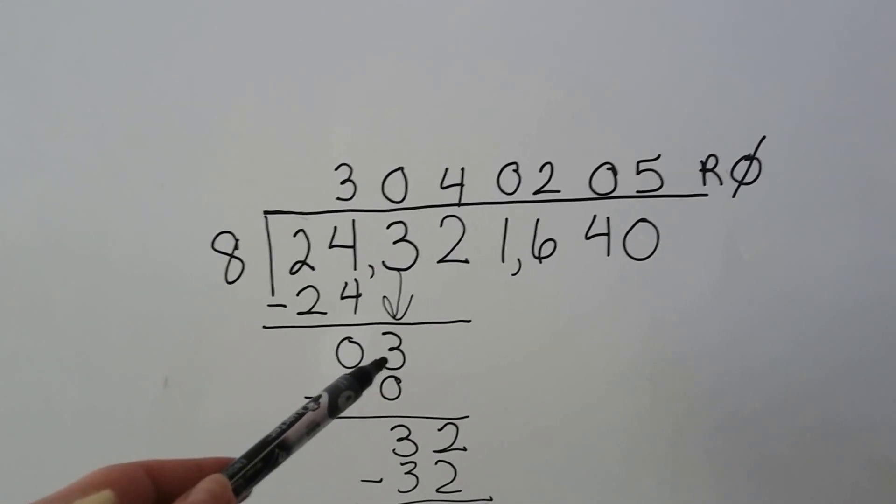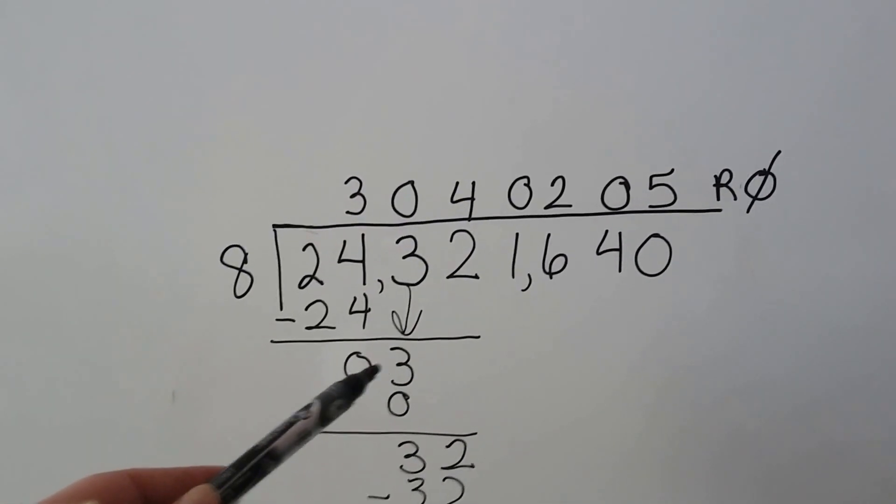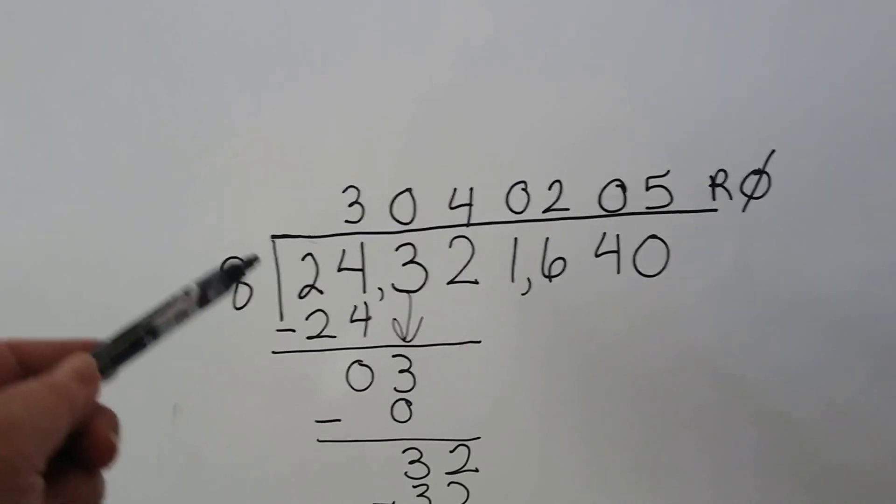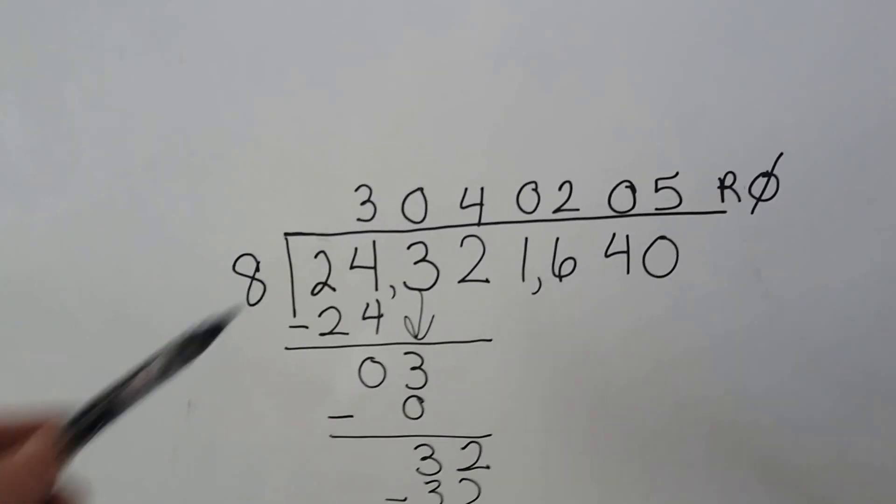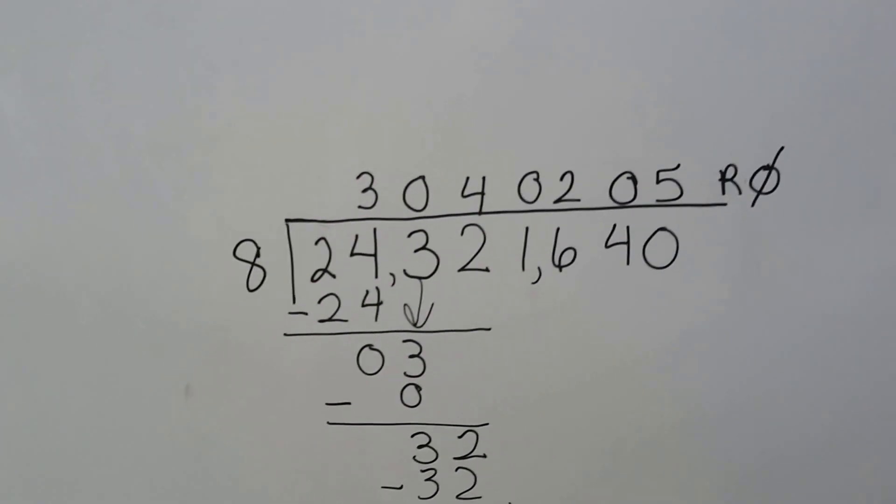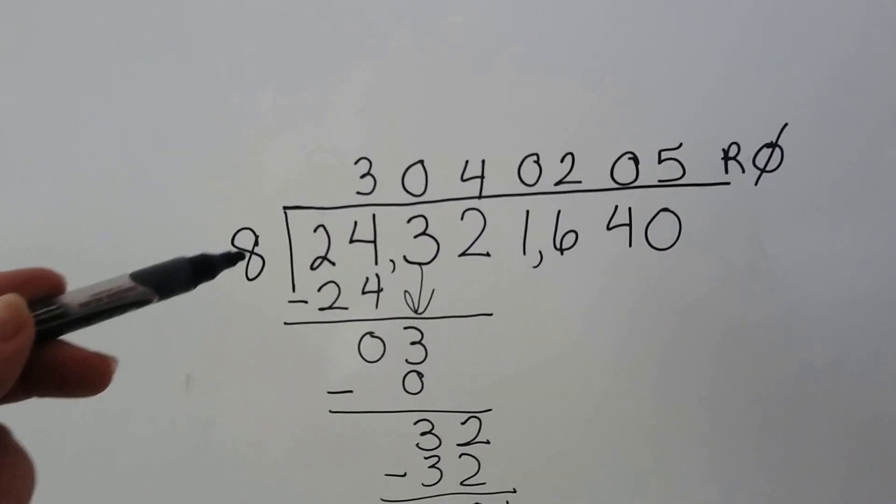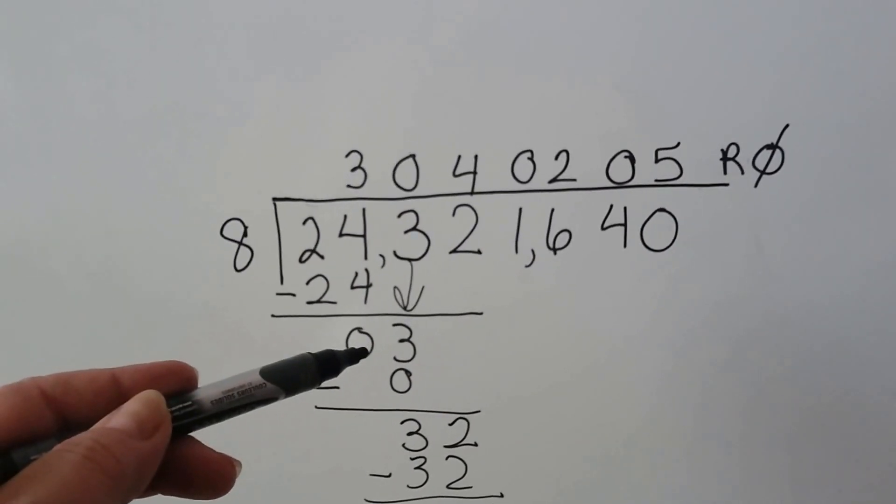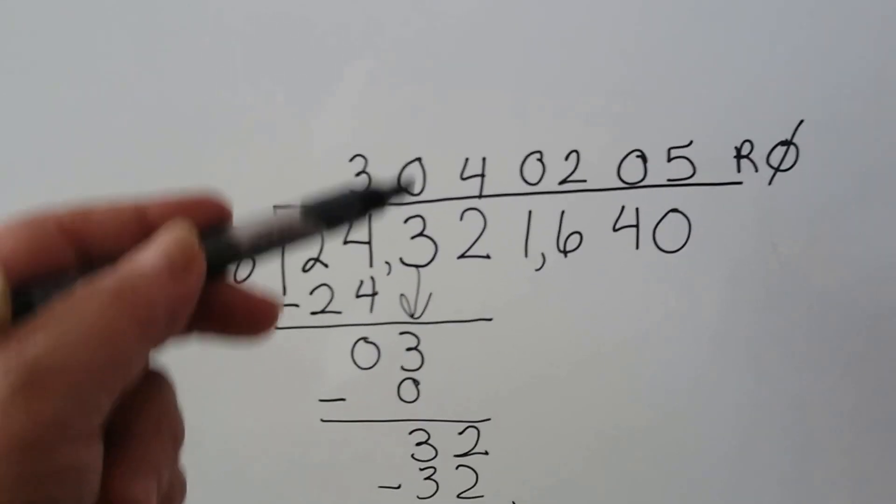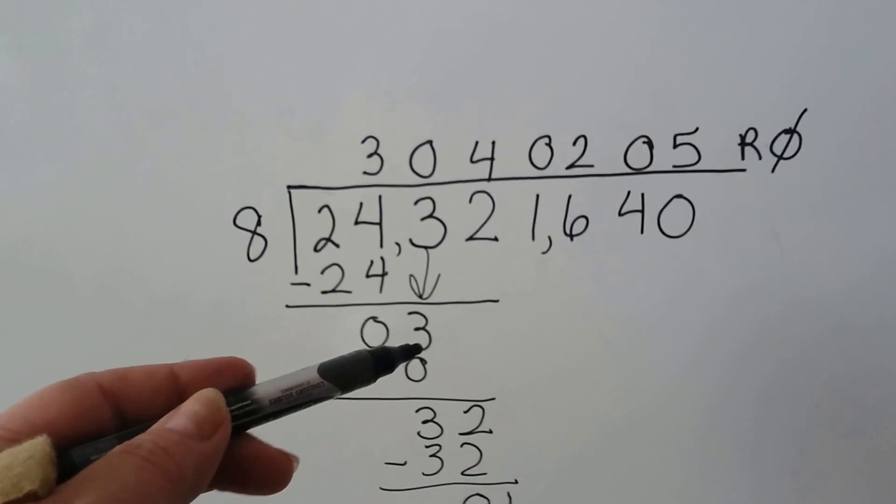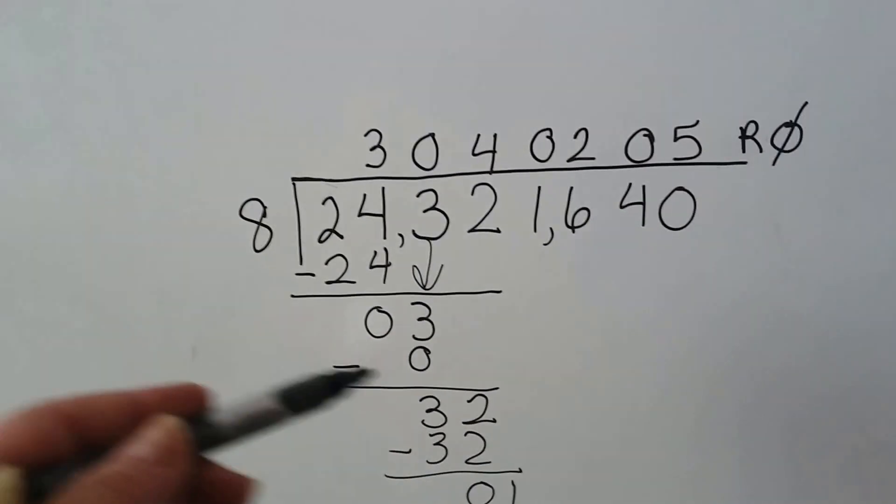Eight cannot go into three. It goes in zero times. So whenever you're doing this and you're saying this divisor fits into the dividend, say to yourself, how many times will it fit into that one? Zero. It fits in zero times. So we're going to put a zero above the three that we dropped down because it fits in zero times.